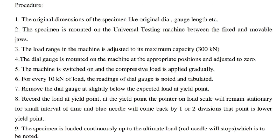Step 4 — Mount the dial gauge on the machine at the appropriate positions and adjust it to zero. Step 5 — Switch on the machine and apply the compressive load gradually. Step 6 — For every 10 kN of load, note and tabulate the readings of the dial gauge. Step 7 — Remove the dial gauge at slightly below the expected load at the yield point. Step 8 — Record the load at the yield point. At the yield point, the pointer on the load scale will remain stationary for a small interval of time and the blue needle will come back by one or two divisions.